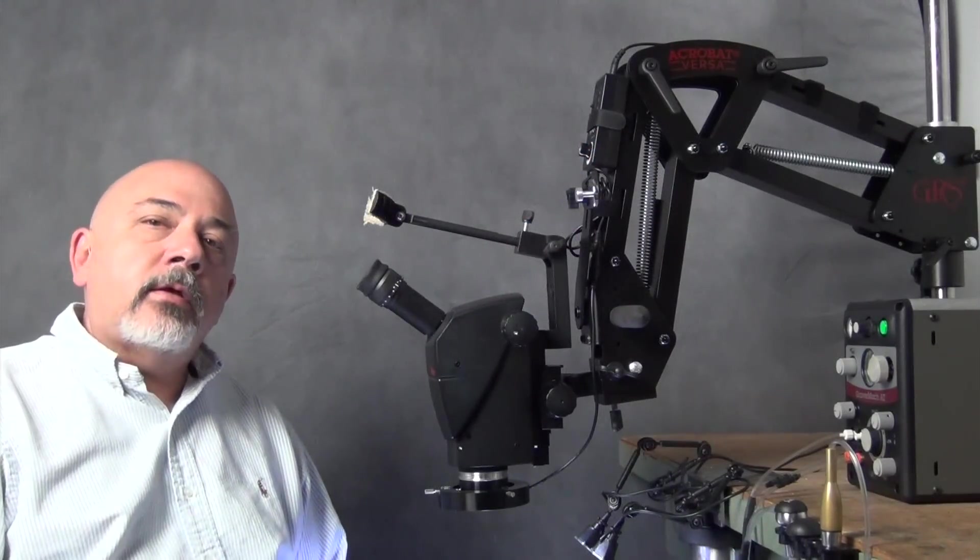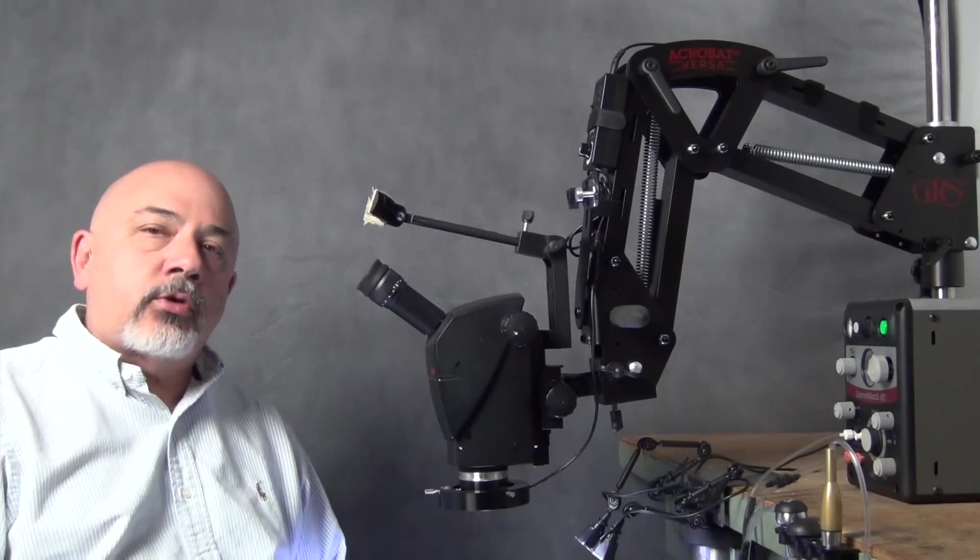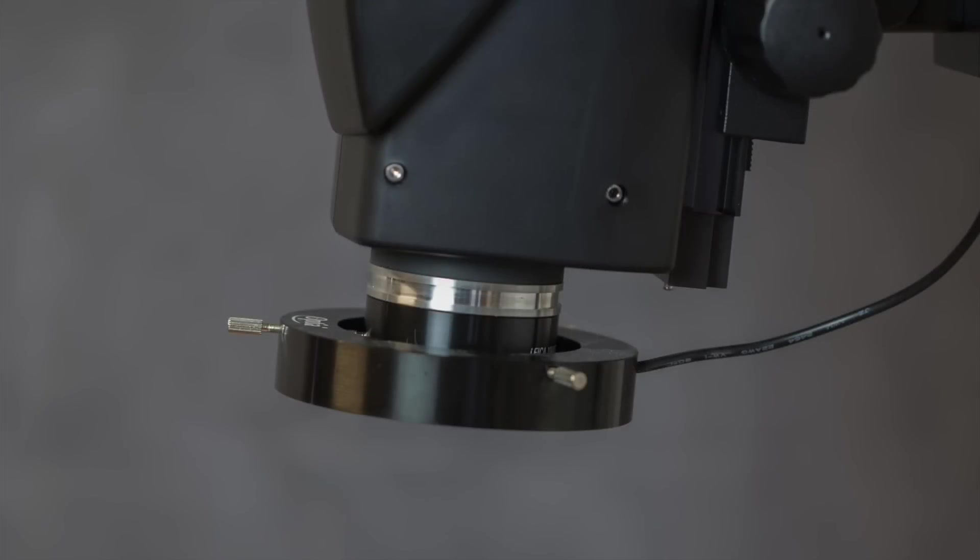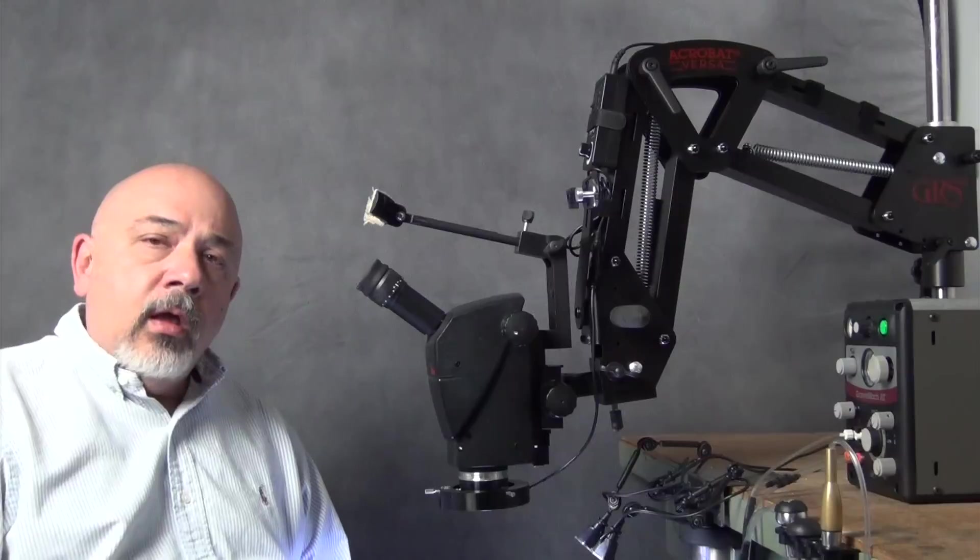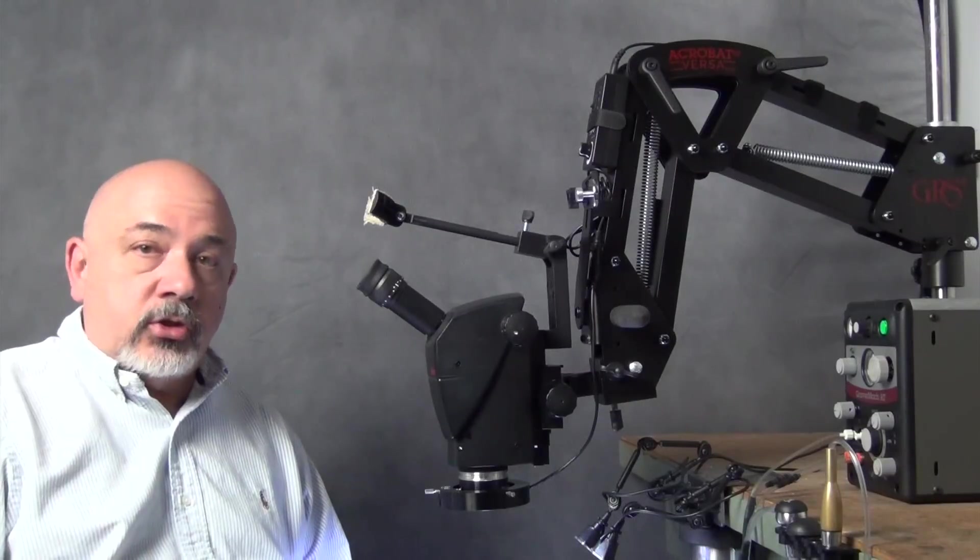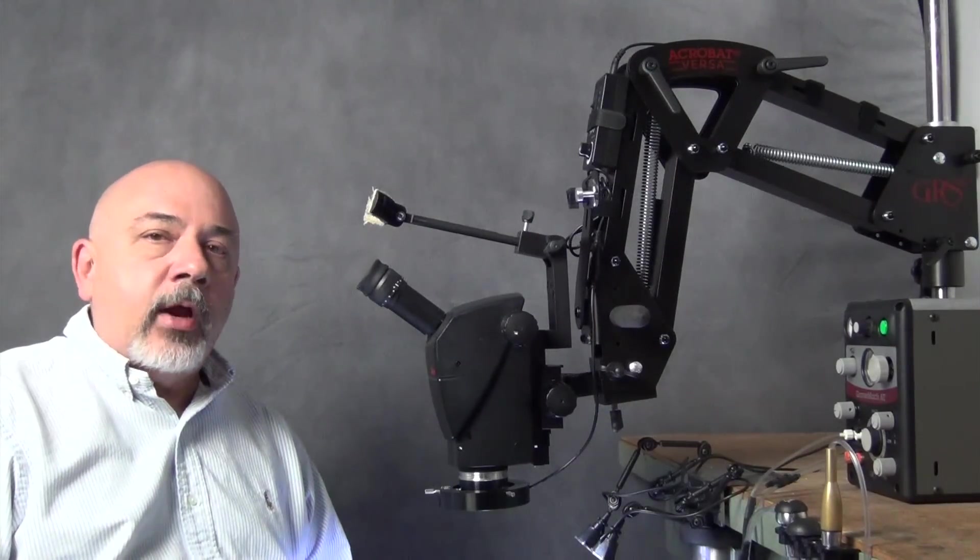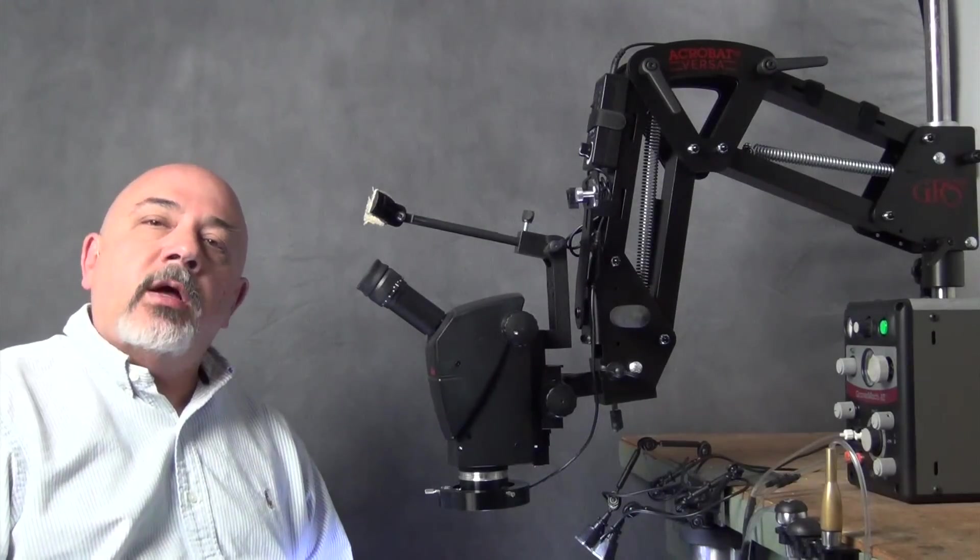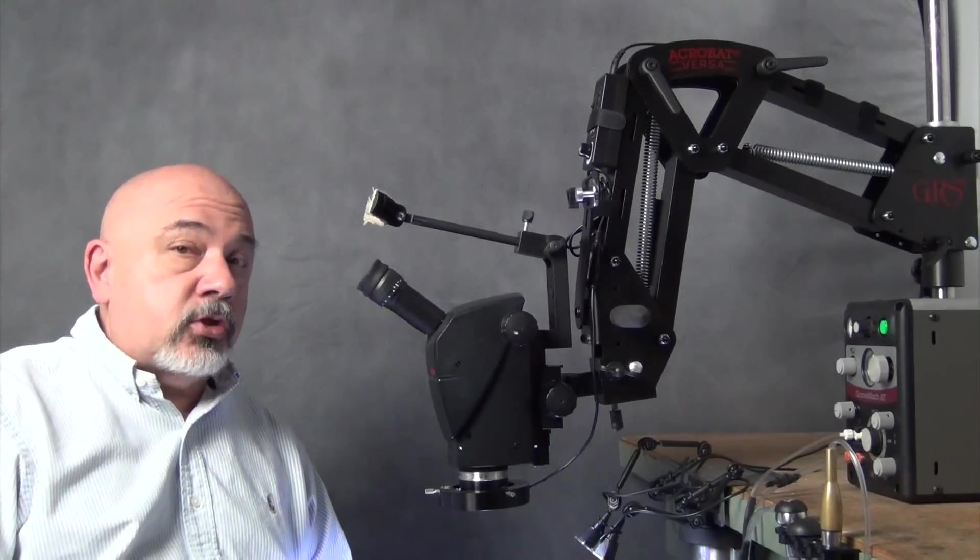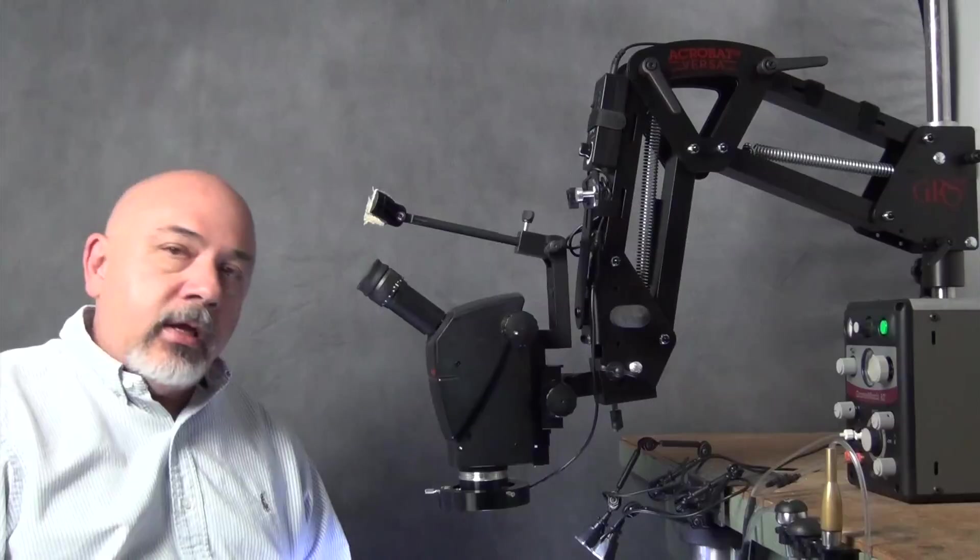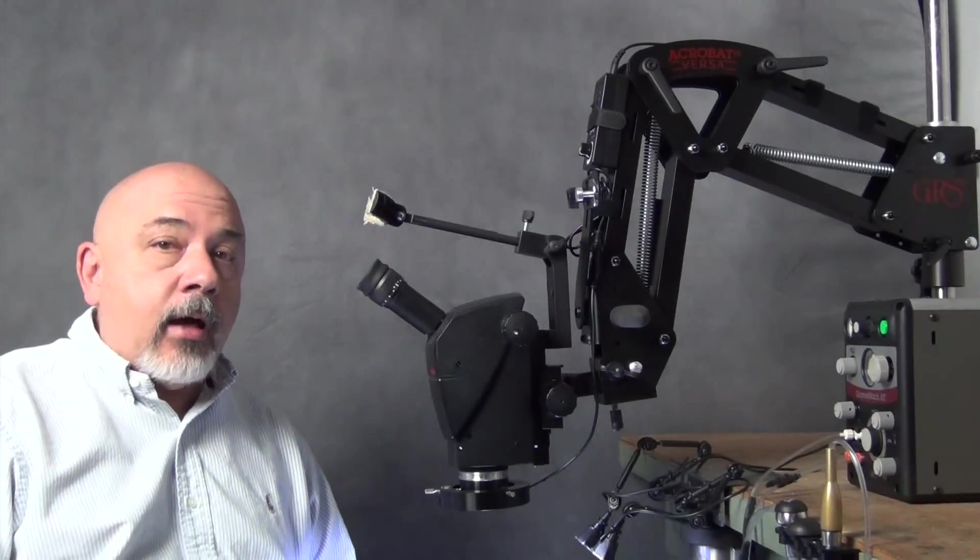The A60 microscope package includes a 0.63 objective lens and this adapter ring right here. That adapter ring doesn't look like it does very much, but it's a very important part of the system. Not only does it allow you to attach various objective lenses to the microscope, but it increases the zoom range from 5 to 1 to 6 to 1. Without the adapter ring, if you attach an objective lens to the microscope, when you zoom the scope, the internal optics can come in contact with the objective lens, and you definitely do not want that to happen.